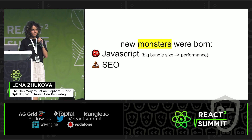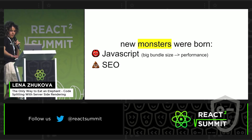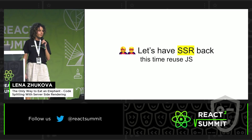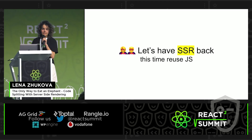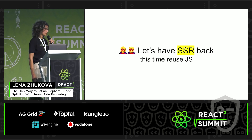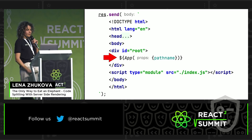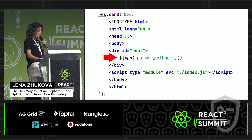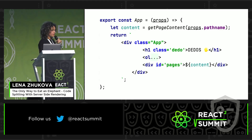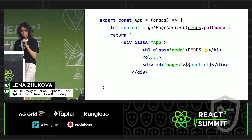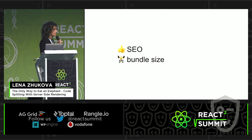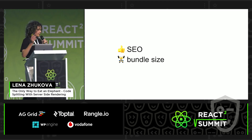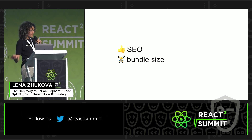Because SEO was a problem. Crawlers can't read JavaScript — they need strings. So JavaScript heroes came back again and decided to bring SSR back. But this time they kept the same JavaScript they had written, because it was too beautiful to throw away. They decided the solution was to render this JavaScript to a string on the server, to have a JavaScript function returning a string. That was a good solution for SSR. It solved the SEO problem, but it didn't solve the bundle size problem. They were using the same JavaScript on both client-side and server-side.